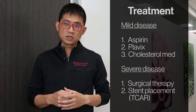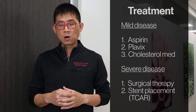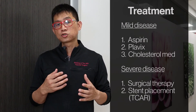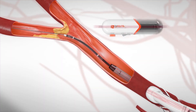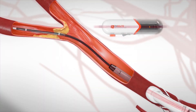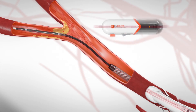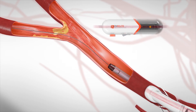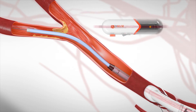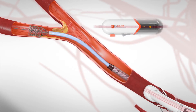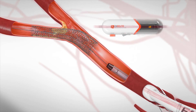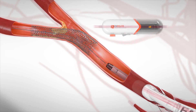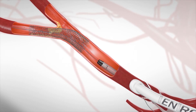The stent procedure is called TCAR, or the trans-carotid artery revascularization using the Silk Road device. A small incision is made at the bottom of the neck and a small catheter is inserted into the carotid artery. The blood flow is temporarily reversed in the carotid artery, which prevents strokes during the procedure.